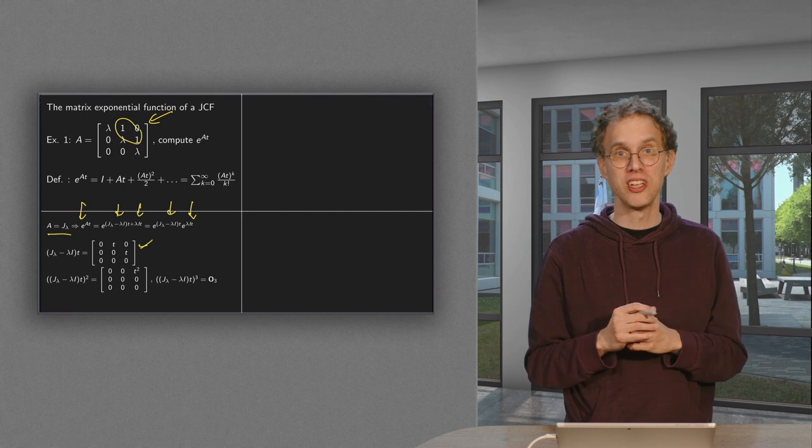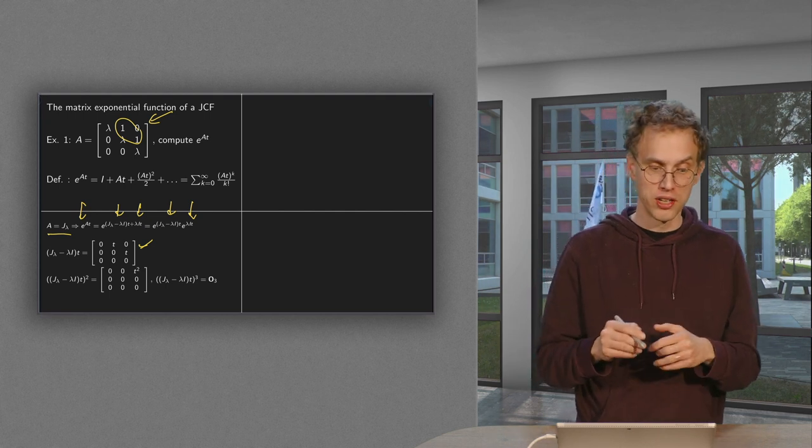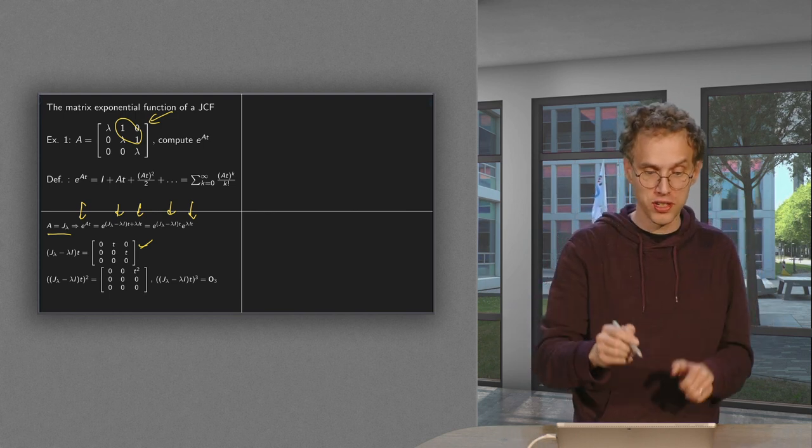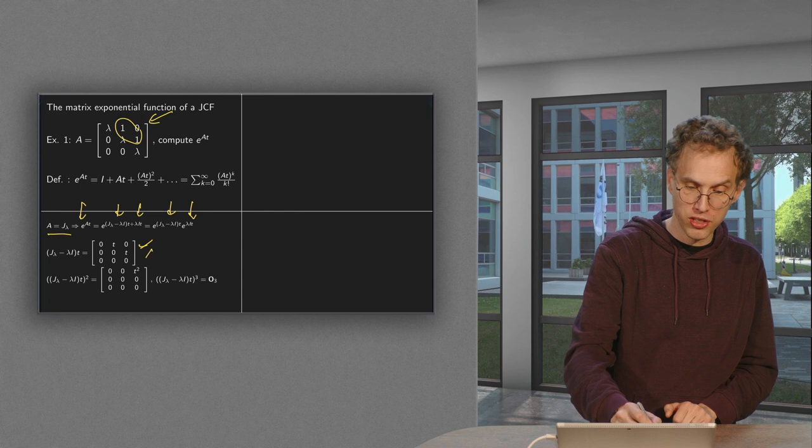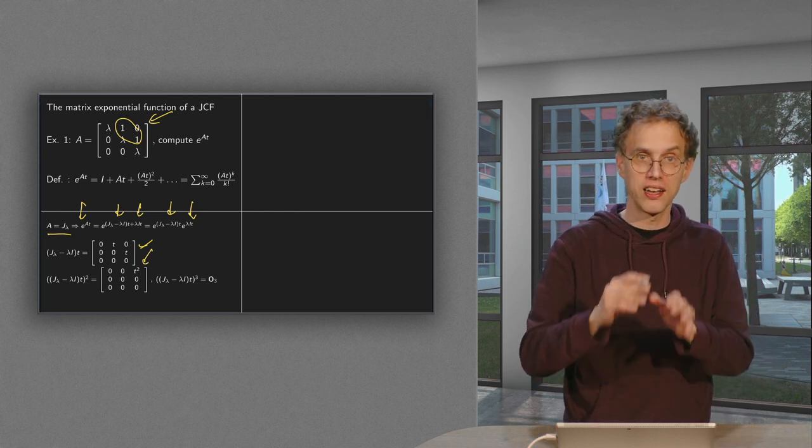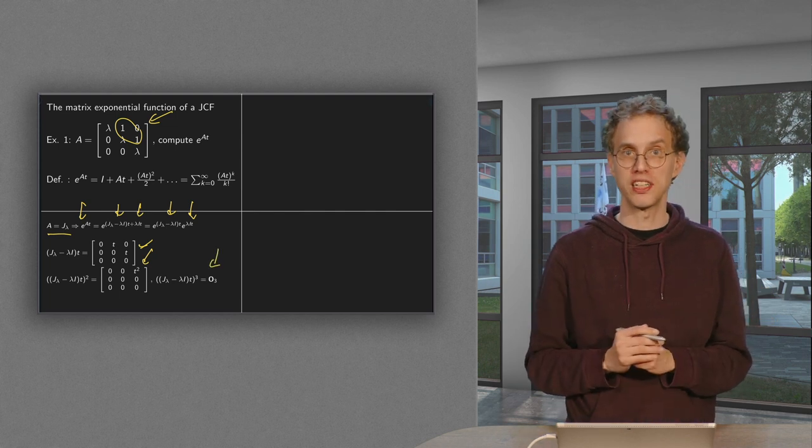So what's so nice about this: if you start squaring this matrix, you get more and more zeros. So if you have J lambda minus lambda I times t, if you square it once, you only have one non-zero element left, t squared over there. And if you square again, you have only zeros left. You have the zero matrix.